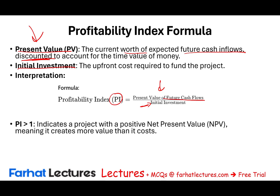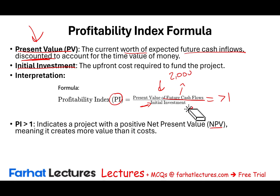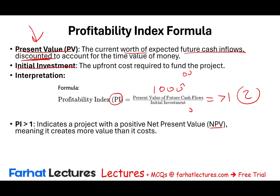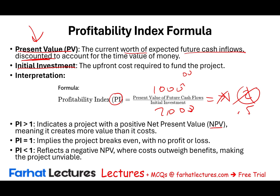If the Profitability Index is greater than 1, it indicates the project has a positive NPV, meaning it creates more value. For this to be greater than 1, the numerator must be higher — for example, if the present value is 2,000 and the initial investment is 1,000, the PI equals 2. If the present value is 1,000 and the initial investment is 2,000, then PI is 0.5 — less than 1 — reflecting a negative NPV where costs outweigh benefits, making the project unviable. A PI of 1 implies the project breaks even with no profit or loss, which relates to the IRR.